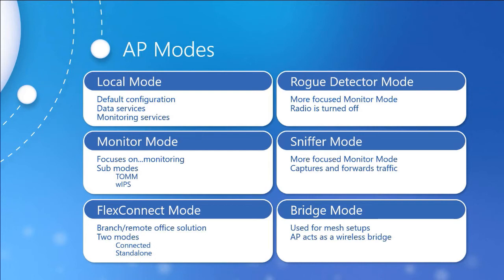Bridge mode is used to set up indoor or outdoor mesh networks. A mesh network is essentially a handful of access points that have connectivity to the controller, while all others rely upon these access points to provide a bridge back to the controller. Instead of all access points being connected to a controller, some are, and others piggyback off those that are connected. This is obviously useful where cabling is difficult to run, and it eliminates single points of failure by establishing redundancy. You can set up bridge mode as the default on any access point that supports it.